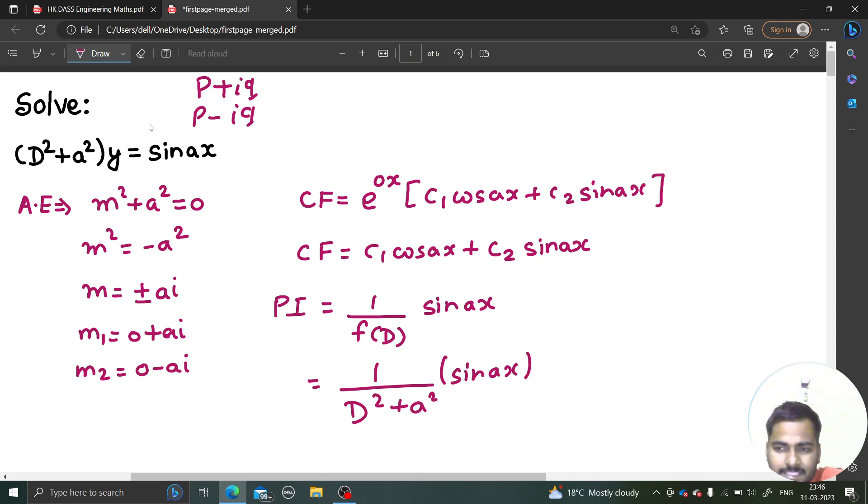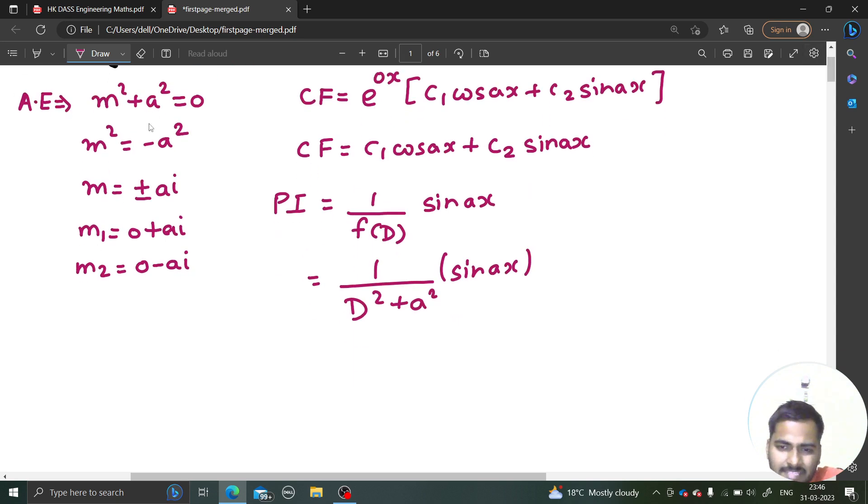Now, replace d square by minus of a square. A is nothing but the coefficient of x. So if you replace this d square by minus of a square, the denominator is becoming 0. So we have a concept that if denominator is becoming 0, then multiply by x outside, not inside.